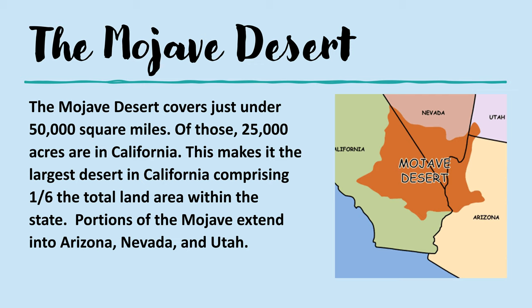The Mojave Desert is a vast arid desert located mostly within the Southern California region. It was named after the Mojave peoples who live along the Colorado River. The topography consists of a basin and range system, meaning lower basins of open valleys and mountains. The boundary of the Mojave within California ranges from the Sierra Mountains to the west and southward to the San Bernardino Mountains. The Mojave extends eastward past the California state boundary into parts of southern Nevada, northern Arizona, and southwestern Utah.